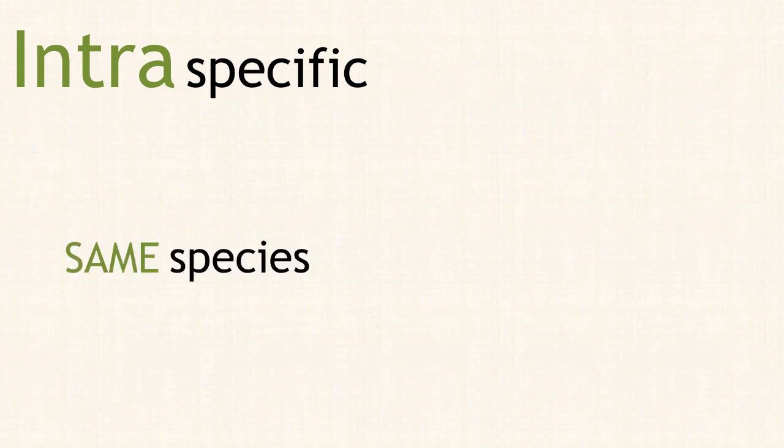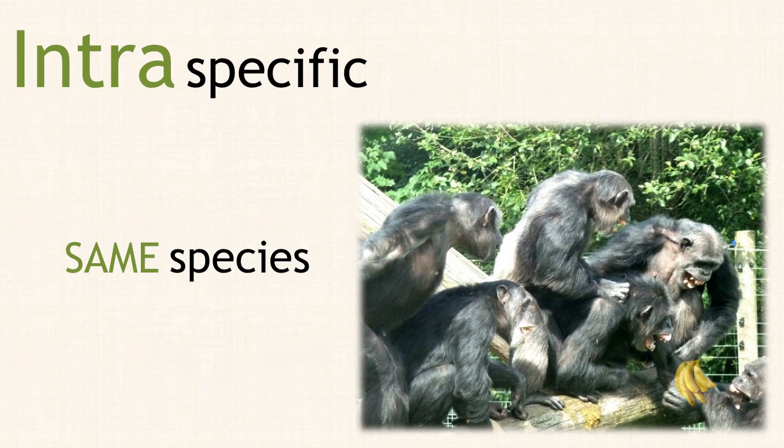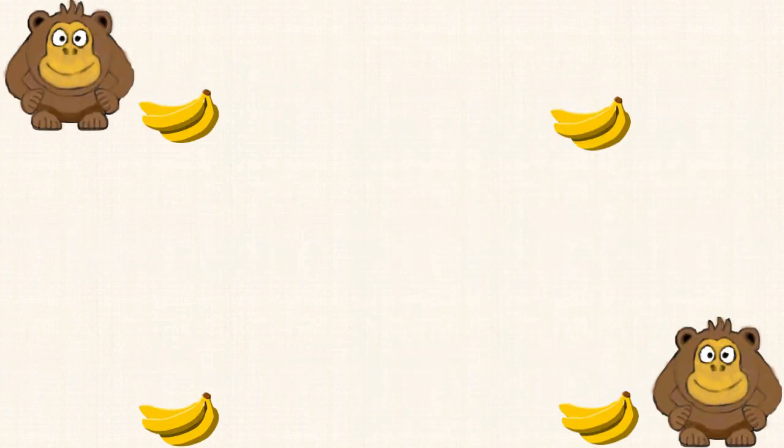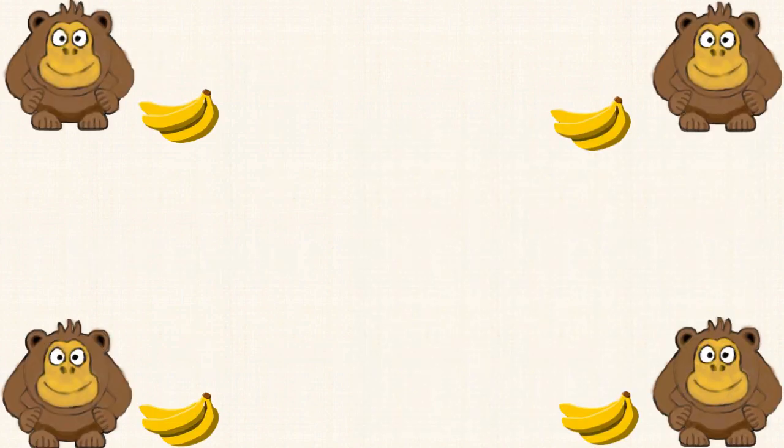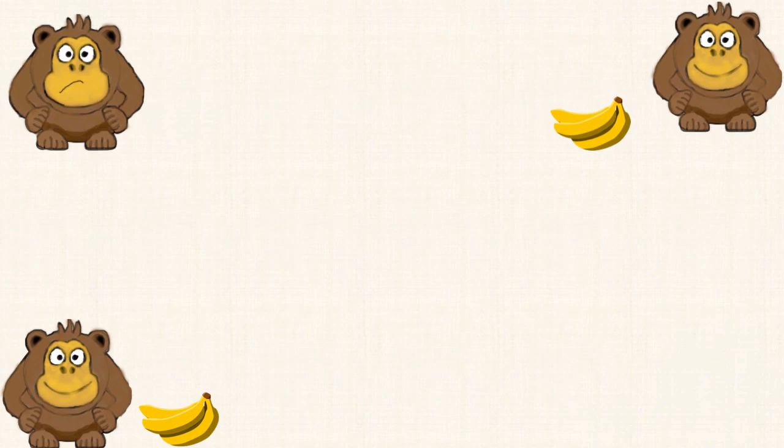Intra-specific interactions are the effects that individuals of the same species have on one another. For example, intra-specific competition is competition between members of the same species, like lots of chimps fighting over a piece of fruit. These members of the same species are competing for the same resources.